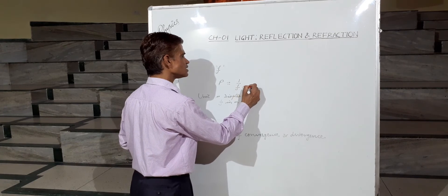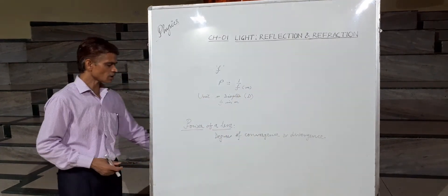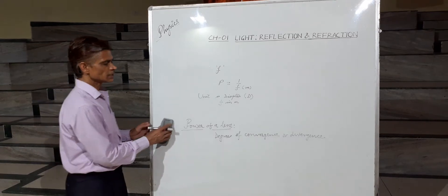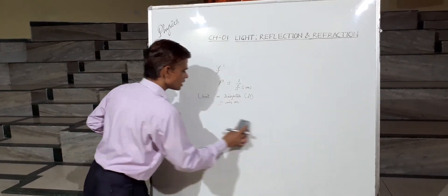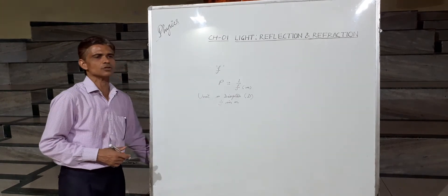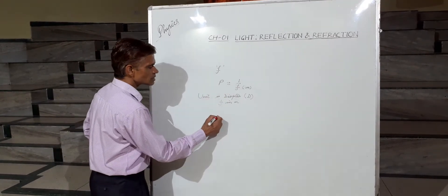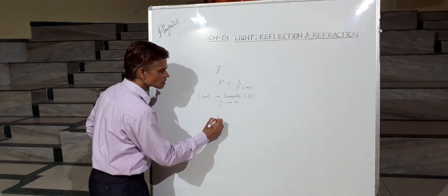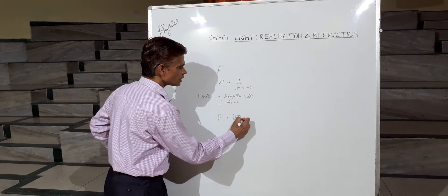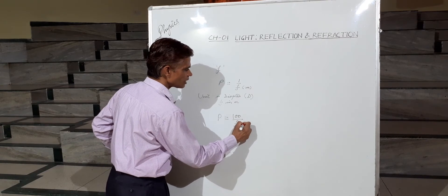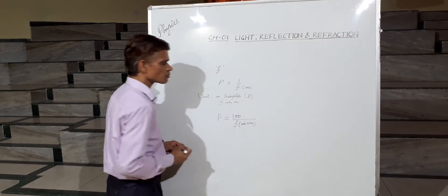Here f is in meters. If the focal length is not given in meters — if it is given in centimeters — then we first convert the focal length into meters and put it in the formula. Otherwise, we use the formula P = 100/f, where f is in centimeters.